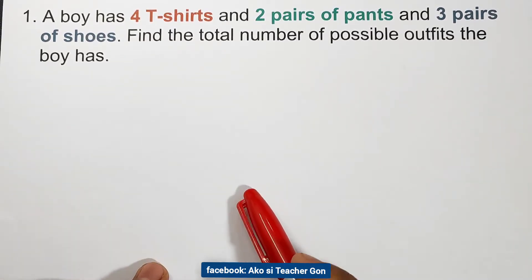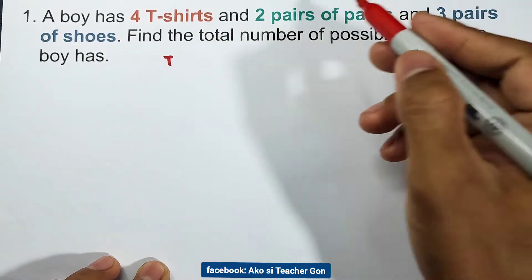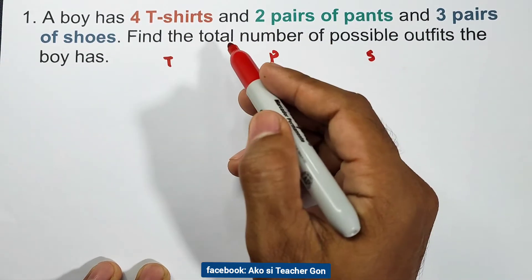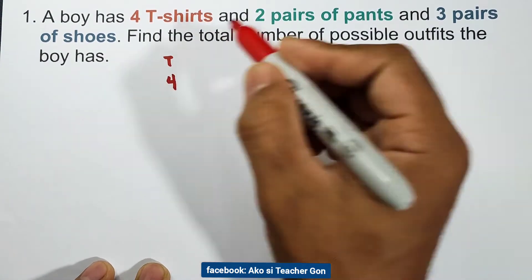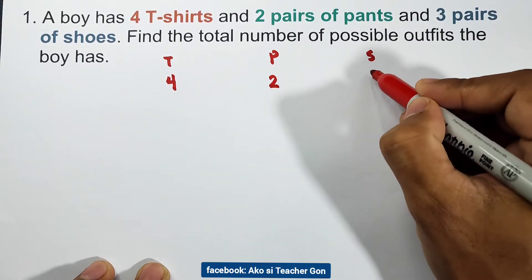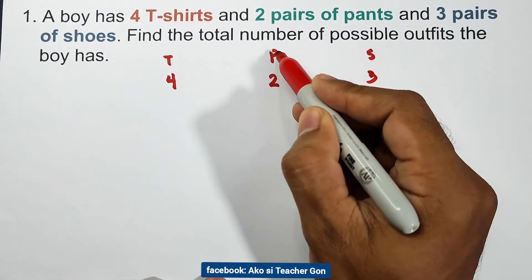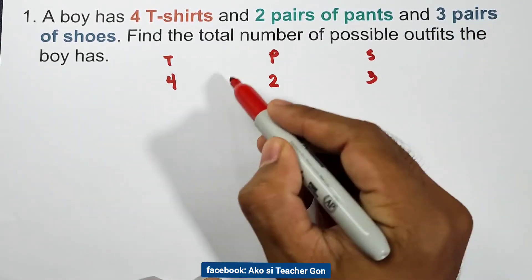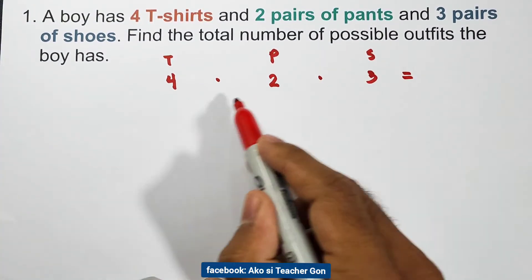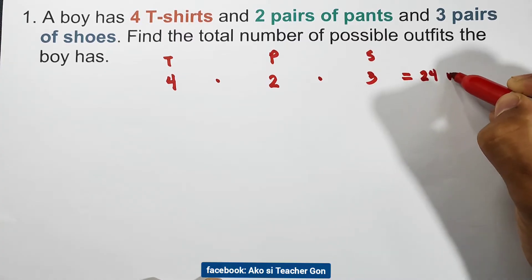For the boy to have a complete outfit, he needs a t-shirt, pants, and shoes. For t-shirts, we have four choices. For pants, we have two choices. For shoes, we have three pairs. Based on the fundamental counting principle, we multiply the choices: four times two times three equals 24 ways.